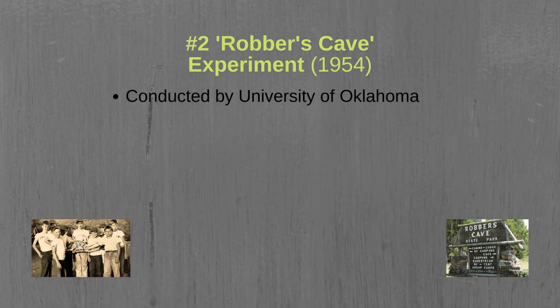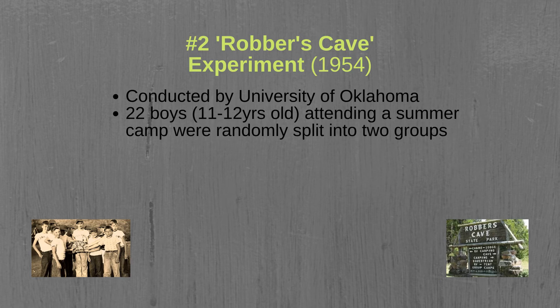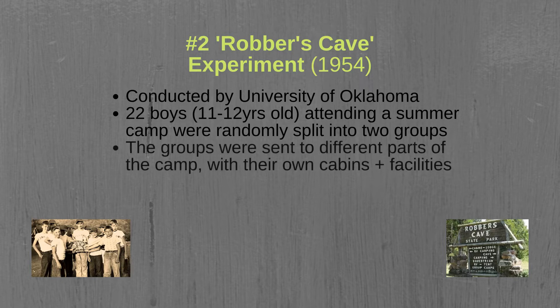The second experiment that we will cover is the Robber's Cave experiment. This study was conducted by researchers at the University of Oklahoma in 1954. In this experiment, 22 boys aged 11 and 12 were randomly split into two different groups. These boys attended a summer camp, but the groups were sent to different areas of the camp, each with their own cabins and other facilities.